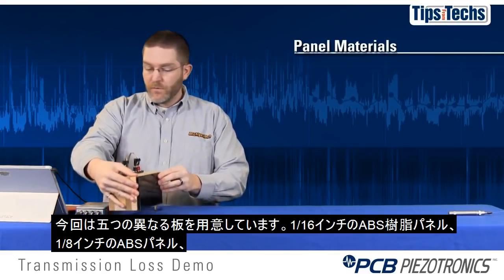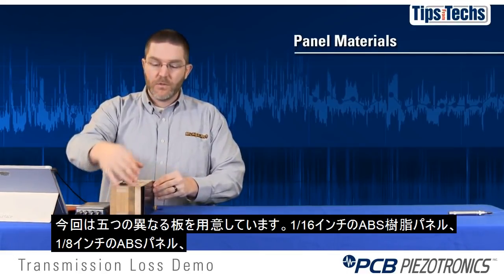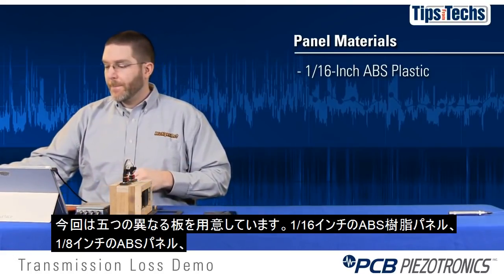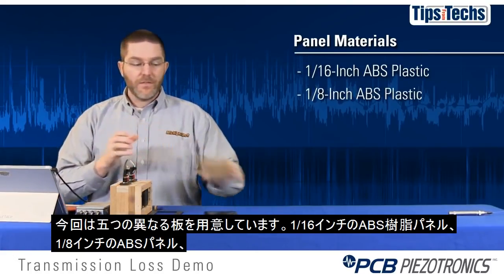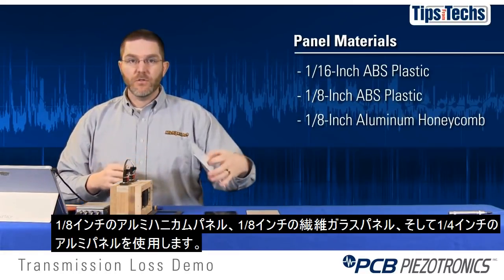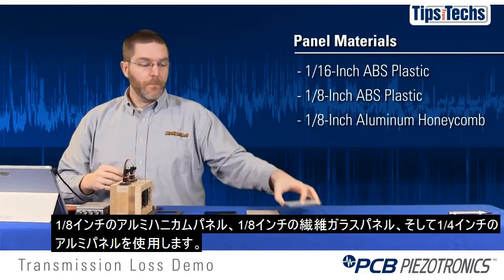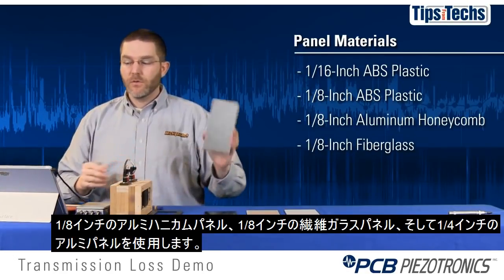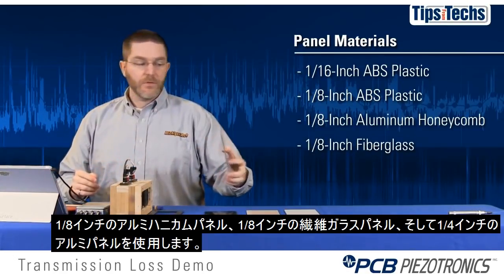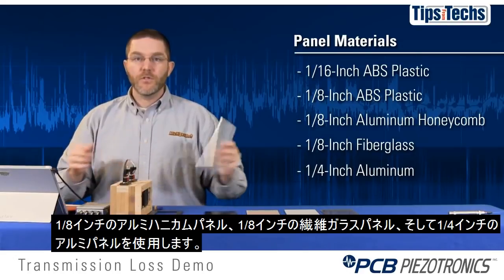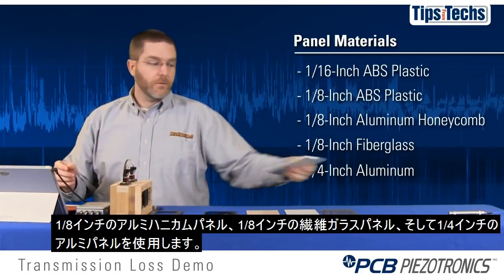We have five different panel materials: a one-sixteenth inch ABS plastic, a one-eighth inch ABS plastic, a one-eighth inch aluminum honeycomb, a one-eighth inch fiberglass material, and a one-quarter inch aluminum panel.